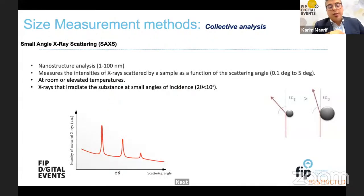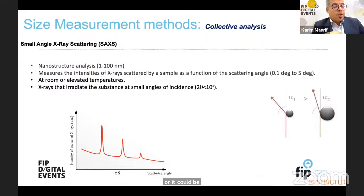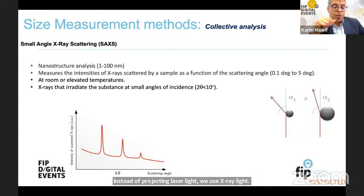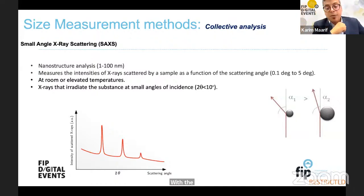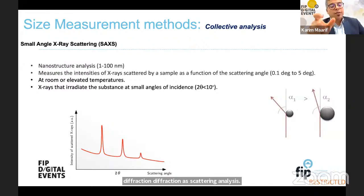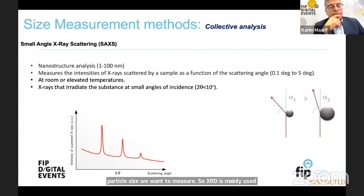Small angle X-ray scattering (SAXS), also called XRD, is used for nanoparticle analysis from 1 to 100 nanometers. Instead of projecting laser light, an X-ray lamp projects X-ray light on particles, and we measure the scattered light with the same principle as laser diffraction scattering analysis. The only difference is the targeted particle size — XRD is mainly used for nanoparticle analysis.